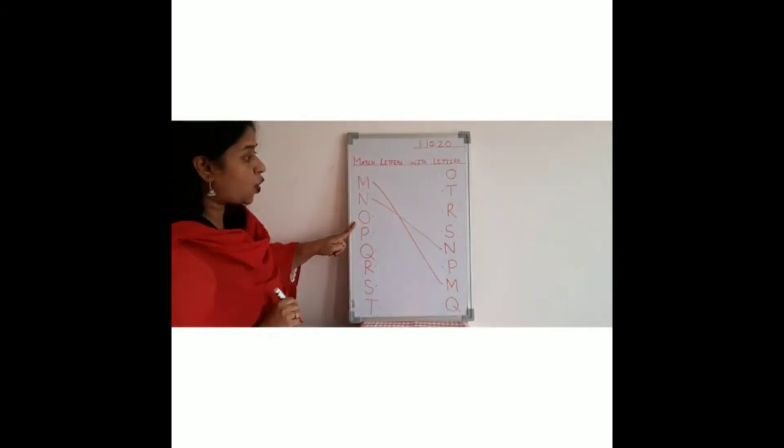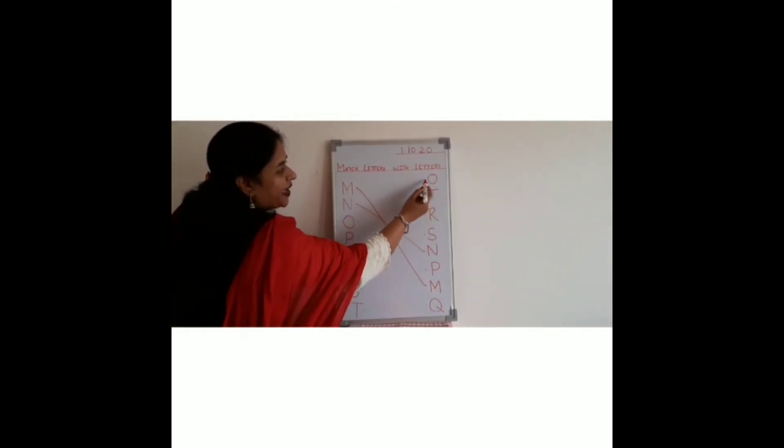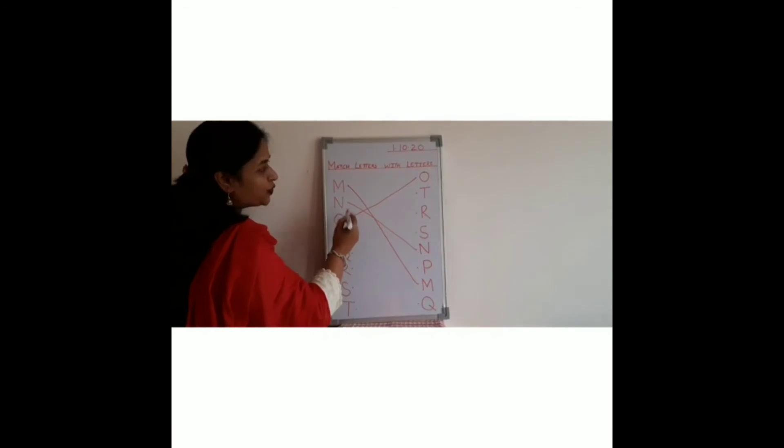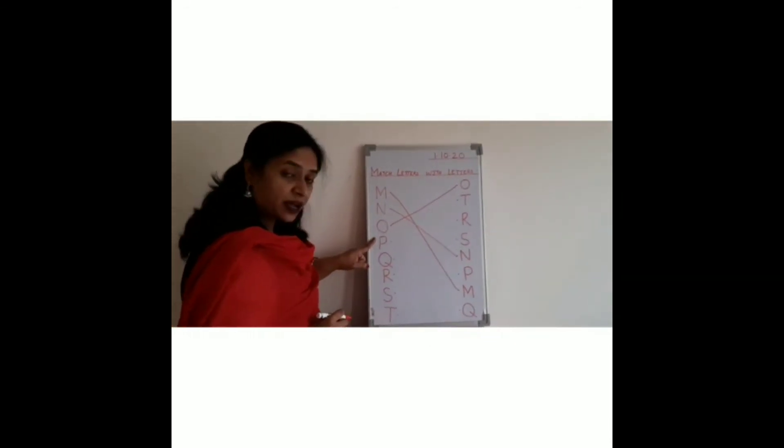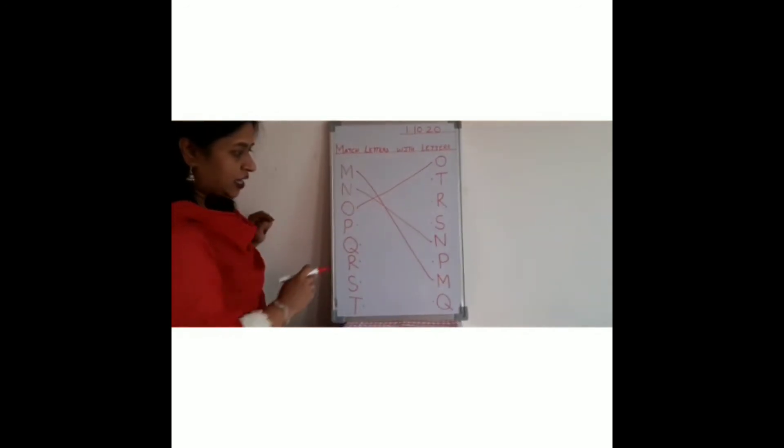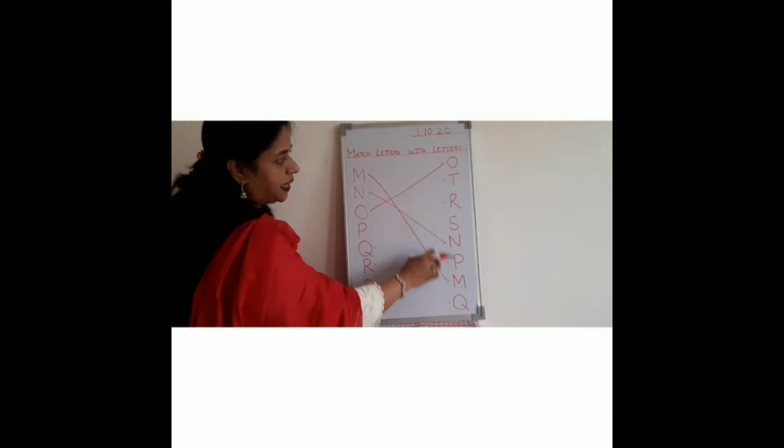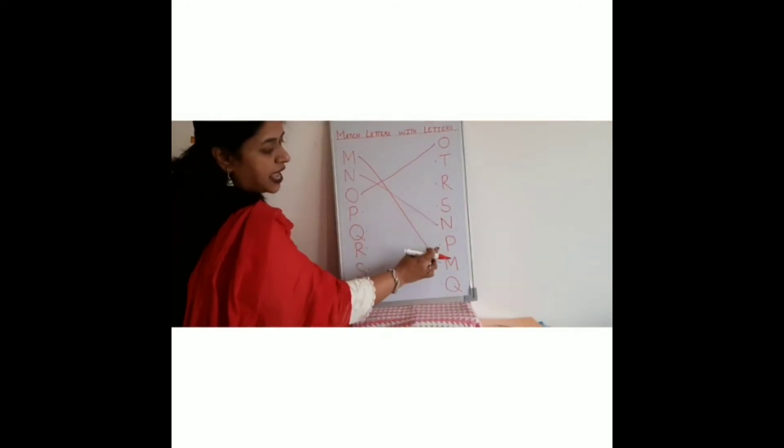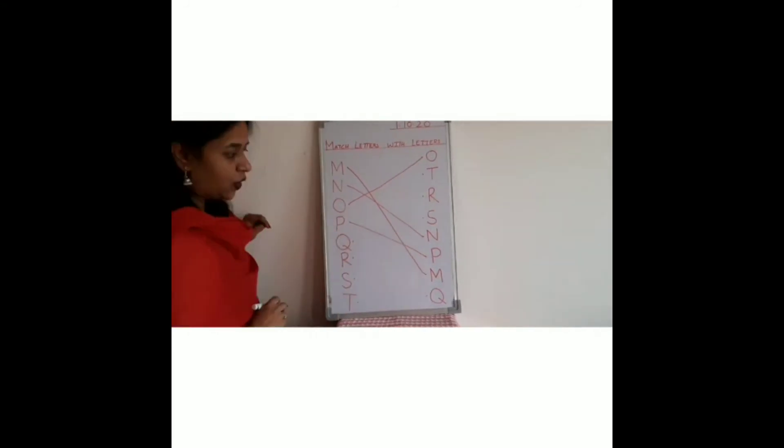Now see here, this is O. Now you have to see where is the P. See, here is the P. T, R, S, and P. So we will match P with P.